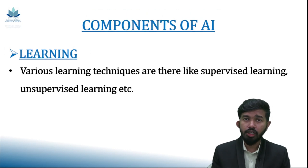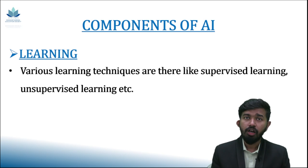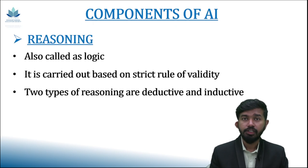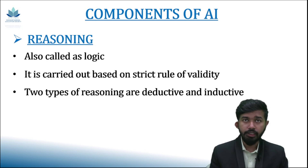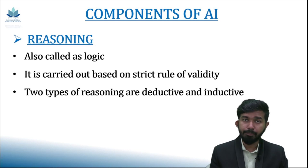The next component is learning. The best way of learning is trial and error, which is a part of unsupervised learning. There are various other types of learning like supervised learning, unsupervised learning, reinforcement learning, etc. Next, we have reasoning. There are two types of reasoning: deductive and inductive. In deductive reasoning, the truth of the premises guarantees the truth of the conclusion. While in inductive reasoning, the truth of premises supports the conclusion but the conclusion cannot be fully dependent on the premises.